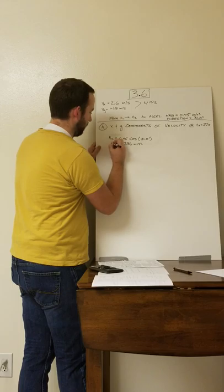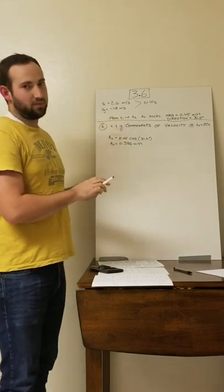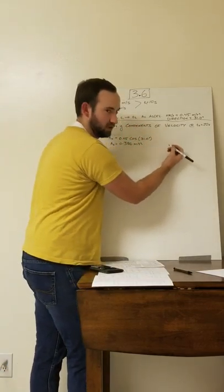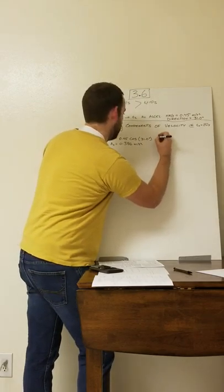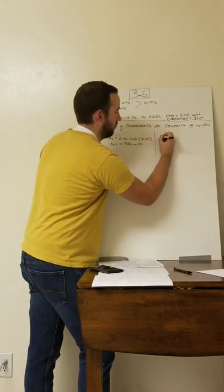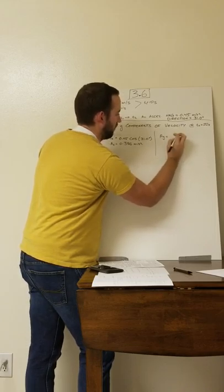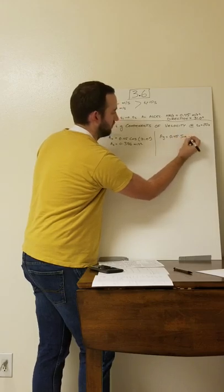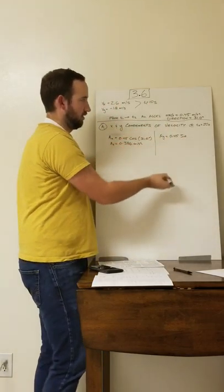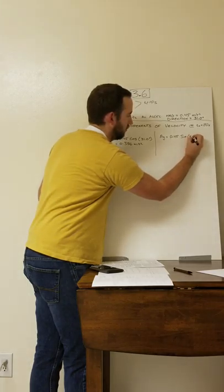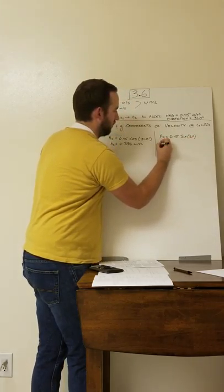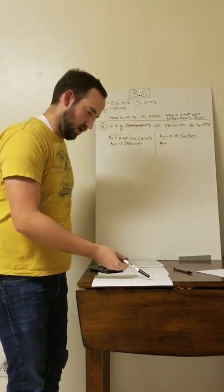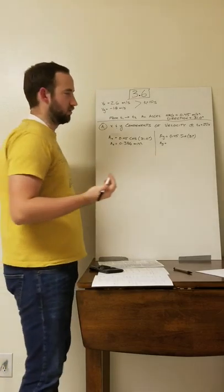That's the x-component of the average acceleration. Now we do the exact same thing for the y-component: ay equals 0.45 times sine of 31 degrees — since it's the y-component we use sine, same angle. Plugging that into the calculator gives ay equals 0.232 meters per second squared.